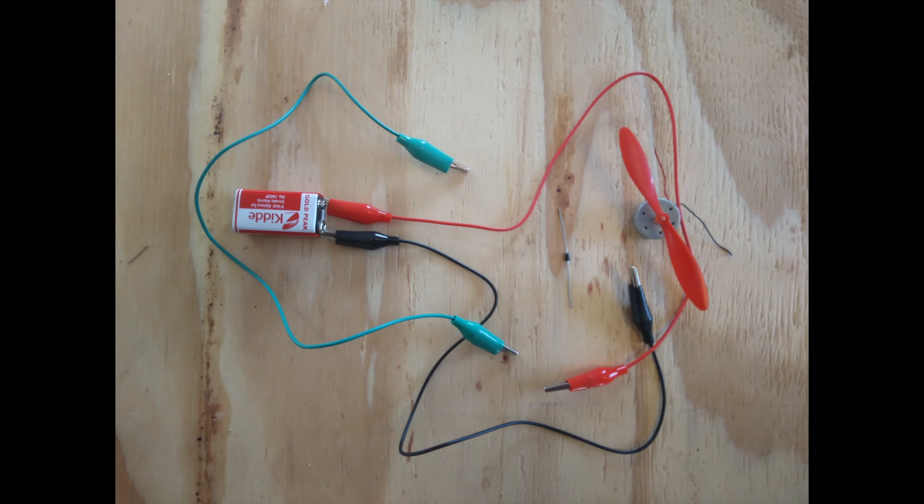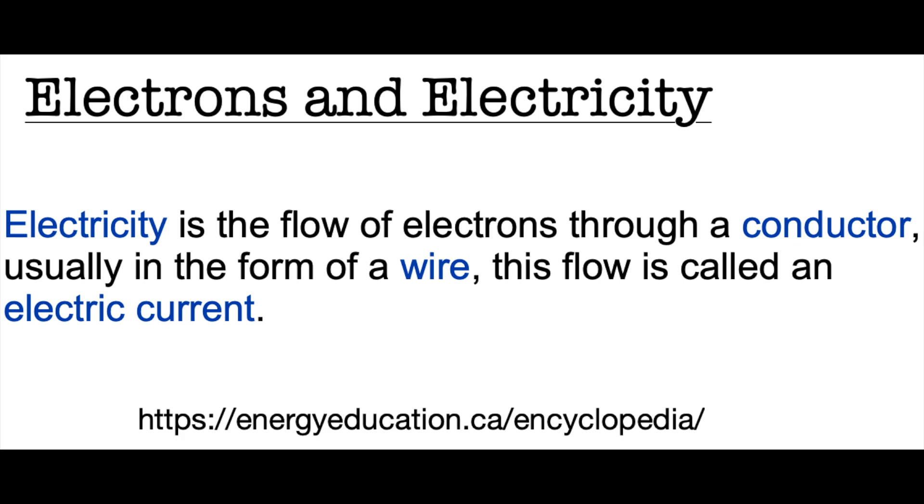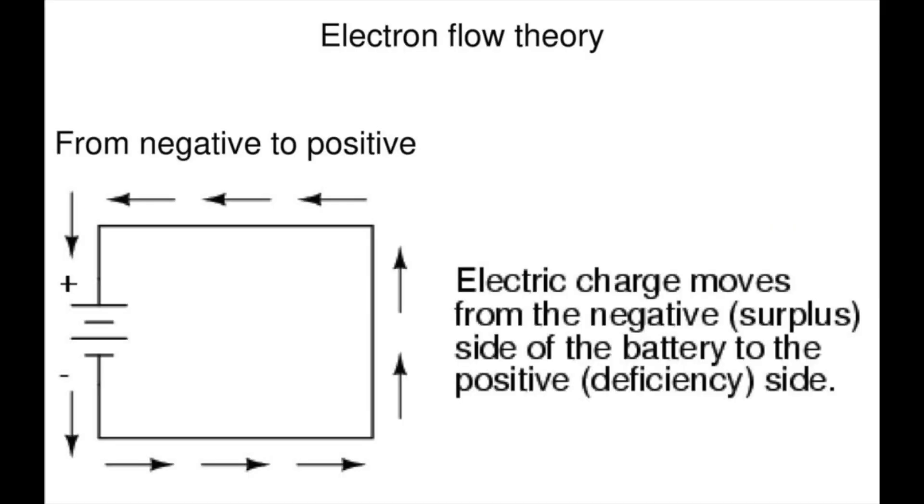For example, say you're designing a circuit containing a diode and you want to try to get an understanding of how the circuit will work. You may first go back and recall what most people learn these days about electricity: that electricity is a flow of electrons through a conductor, usually in the form of a wire, and this flow is called an electric current. And this flow of electrons flows from the negative to the positive.